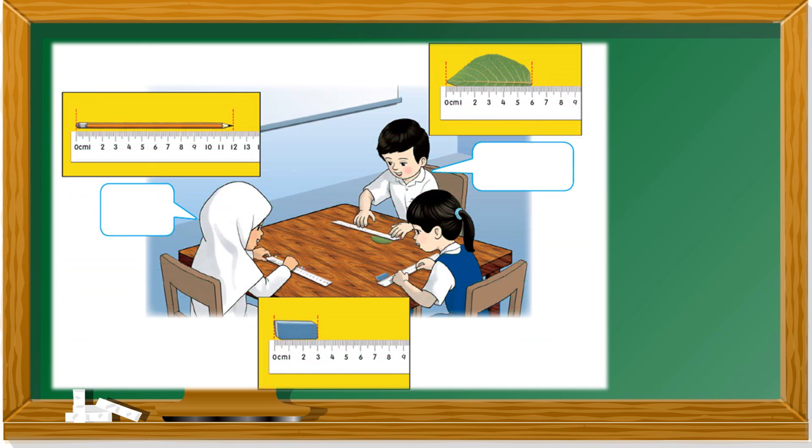Let's look at this situation where they are measuring things. Start from zero. You put the item, one of the tip or one of the sides at zero. Then you have to measure accurately, ukur dengan tepat. How long is the pencil? It's 12 centimeter. How about the leaf? Six. How about the eraser? Three.